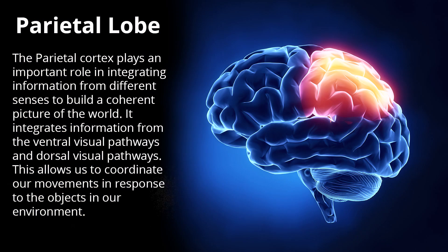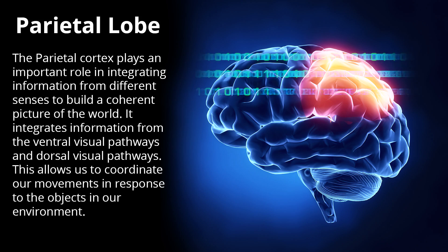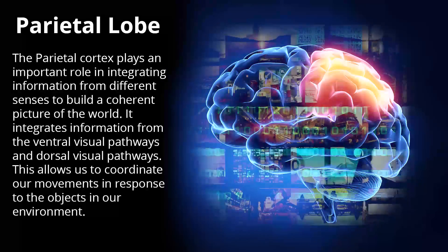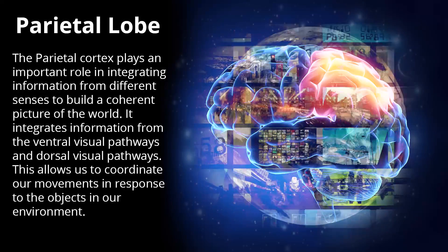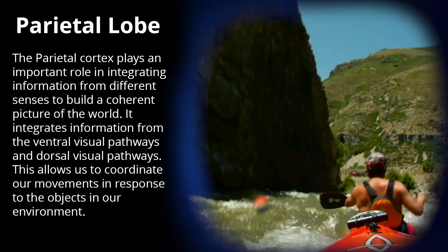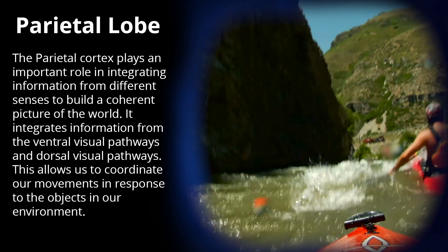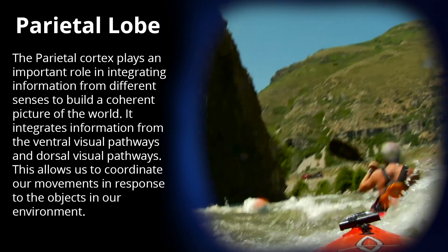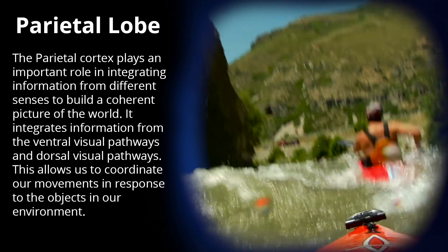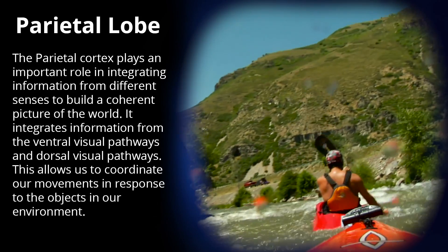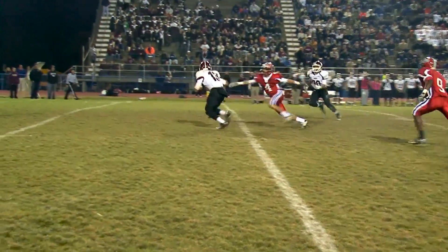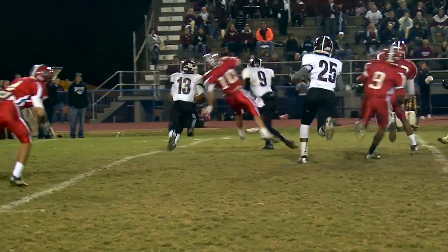The parietal lobes. The parietal cortex plays an important role in integrating information from different senses to build a coherent picture of the world. It integrates information from the ventral visual pathways and dorsal visual pathways. This allows us to coordinate our movements in response to the objects in our environment.